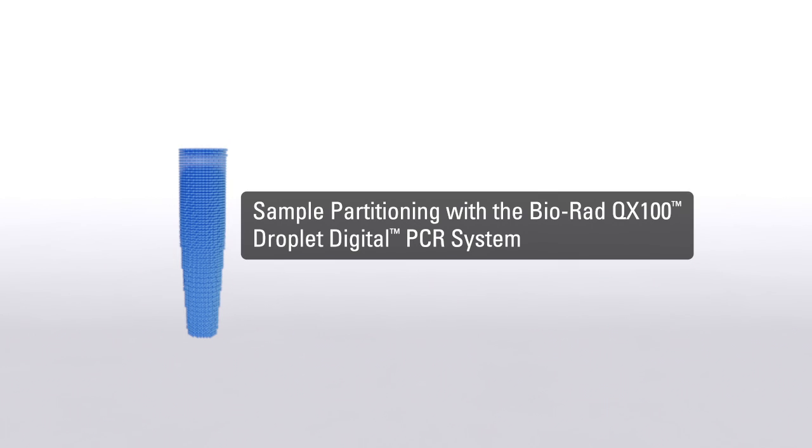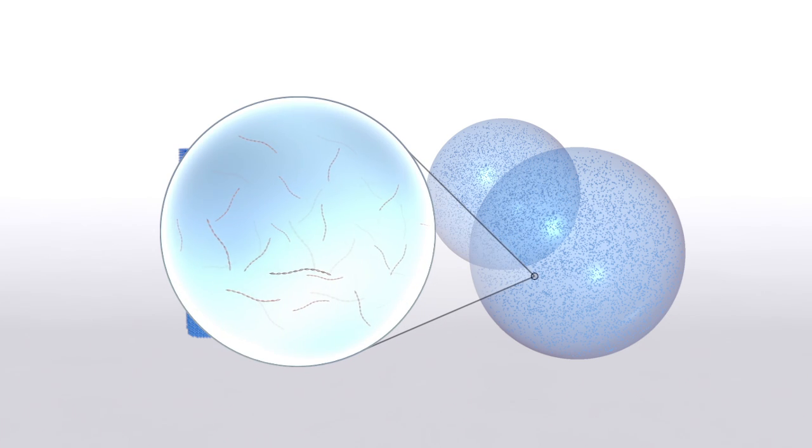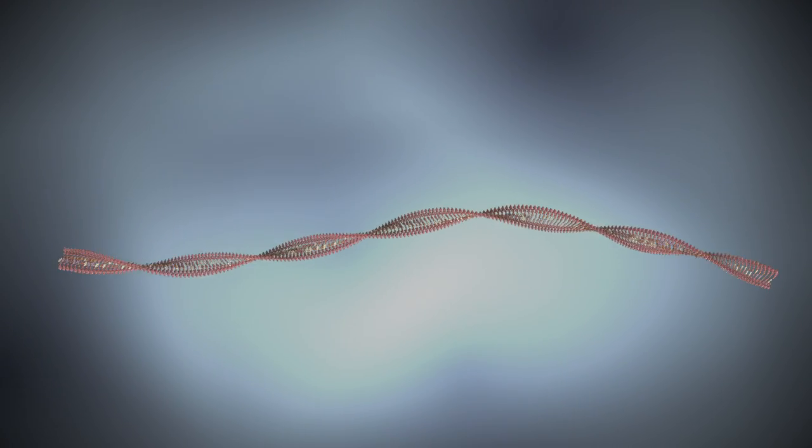Let's see how droplet digital PCR achieves precise DNA measurements. The key is sample partitioning. With droplet digital PCR, reaction mixes are partitioned into approximately 20,000 evenly-sized droplets, each one nanoliter in volume.